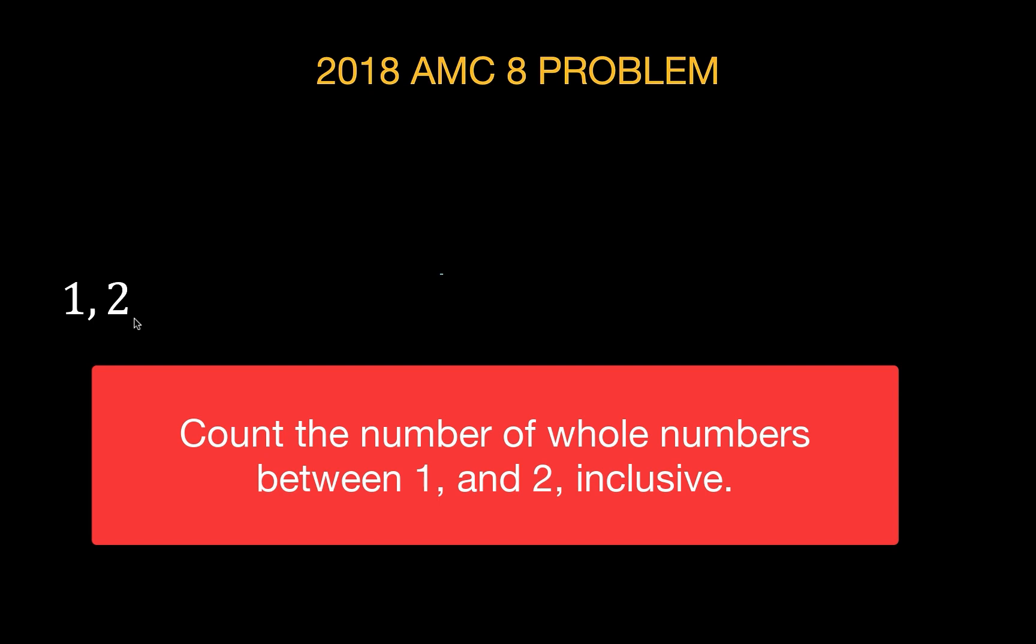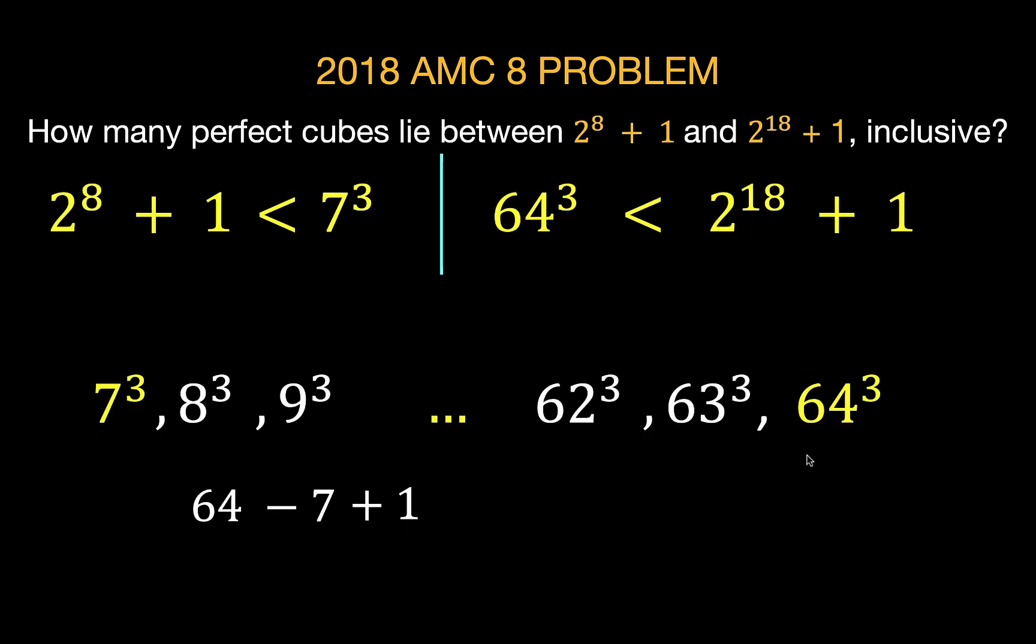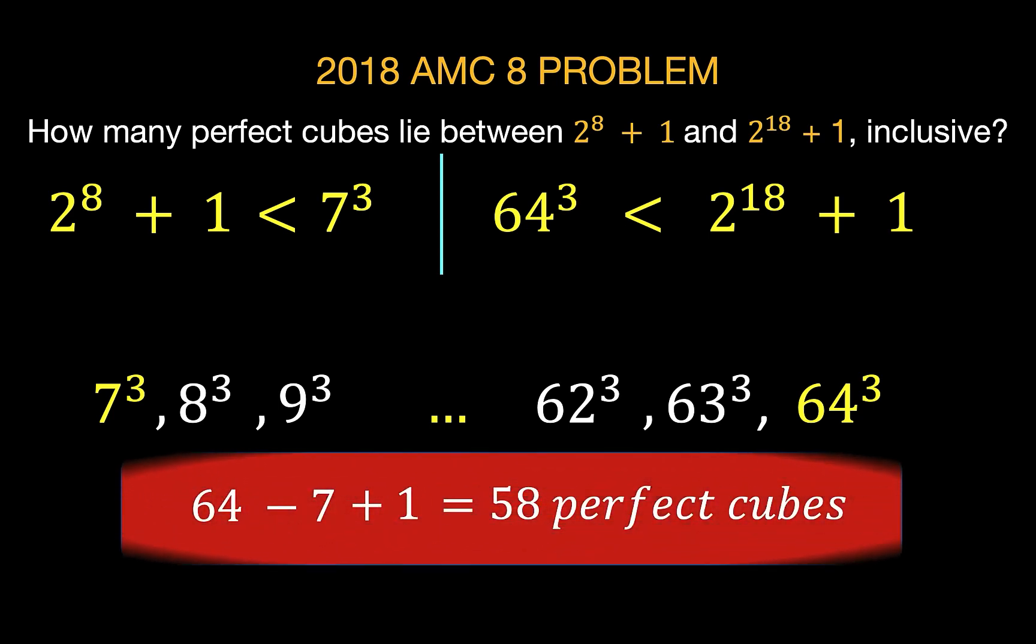Clearly we are not counting it correctly. We have to add 1 more so that we can get the exact number of numbers between 1 and 2. That is the reason why we also have to add this 1, because we are under counting when we just subtract 64 minus 7. Because when we count, we start with 1. So adding and subtracting now from left to right, we have 64 minus 7 plus 1 equals 58. There are a total of 58 perfect cubes in between 2 to the 8 plus 1 and 2 to the 18 plus 1 inclusive. And this problem is now solved.